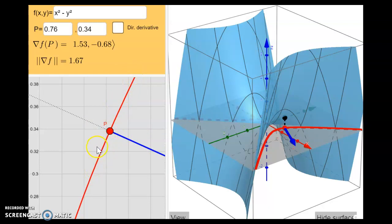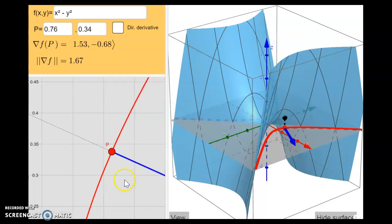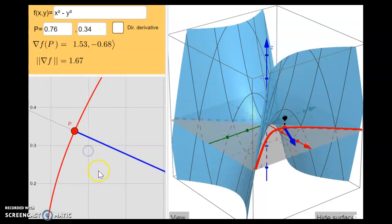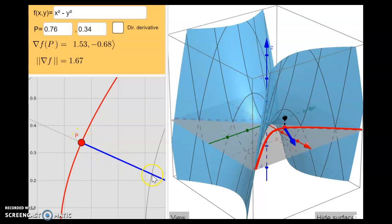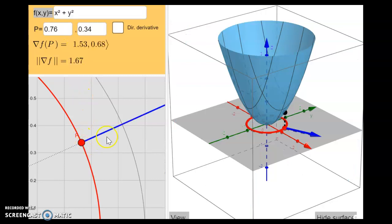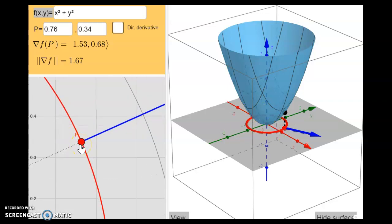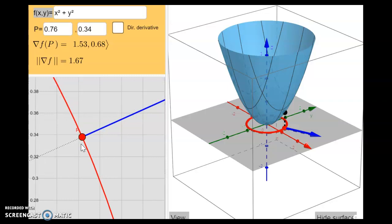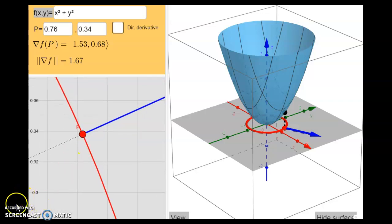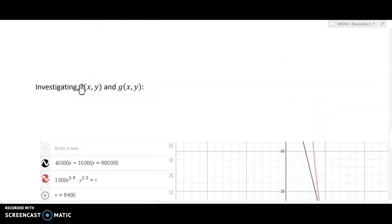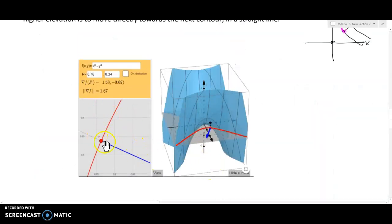Let me go ahead and zoom in on that contour. As I zoom in further and further and further we're getting to the point of local linearity where what started off as a curve appears to be a straight line. We can certainly agree that that appears to be pretty perpendicular - that blue vector, that gradient vector, appears to be pretty perpendicular to our contour. In fact it points us directly towards the next contour, which in a straight line would take us there as quickly as possible.